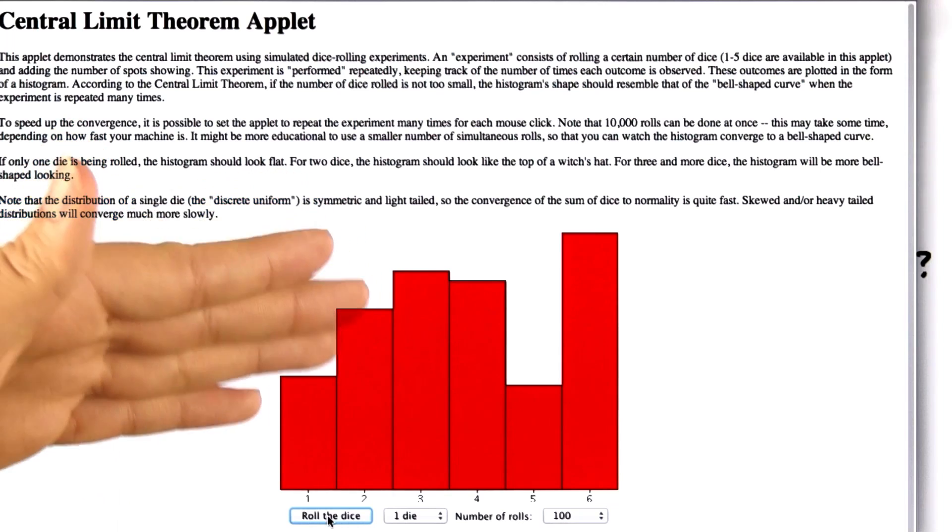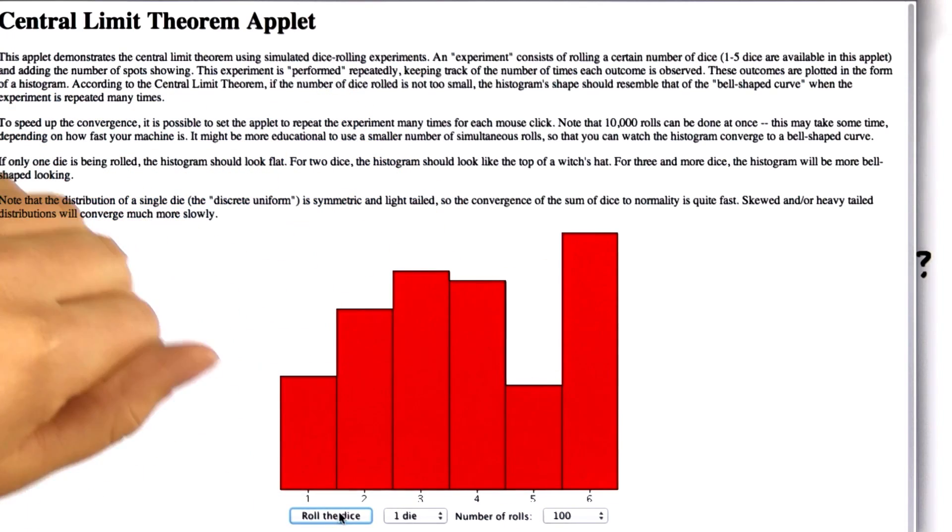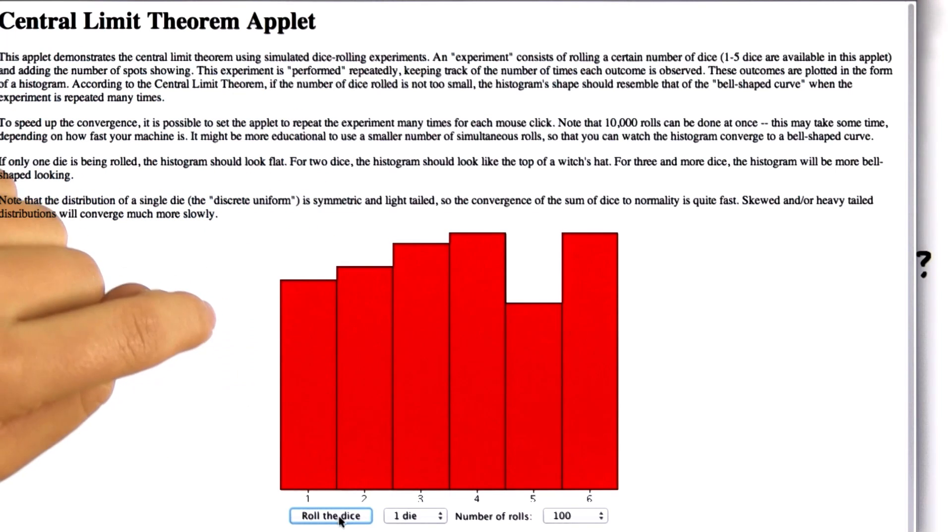So by chance, by simulation, we get a lot more sixes than fives. Let's try it again. Our distribution is looking pretty uniform.